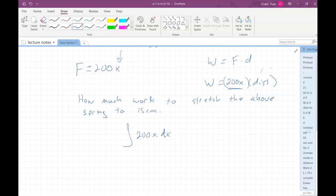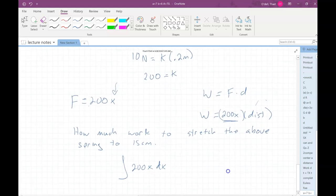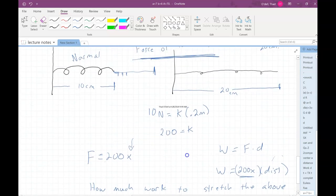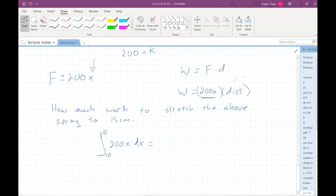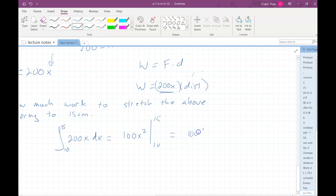And of course, since we're going to 15 centimeters, now remember it's normally 10, so we're actually going from 10 to 15, because the normal length of the spring is 10. So we're going to stretch it from 10 to 15. And that would be, if we just evaluate the integral, it'll calculate the work done. So we're going to, let's see, that would be 100x squared from 10 to 15.